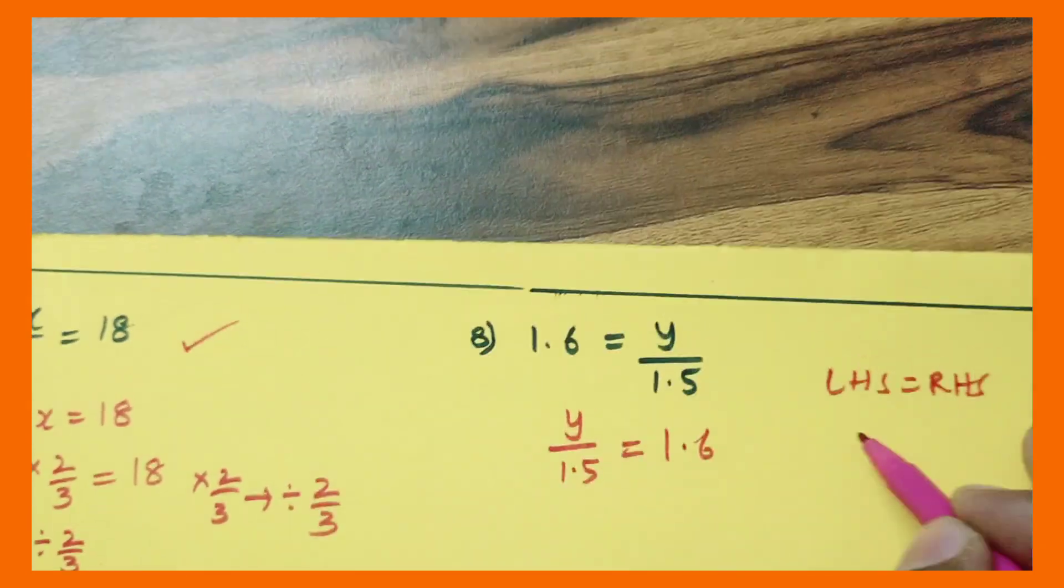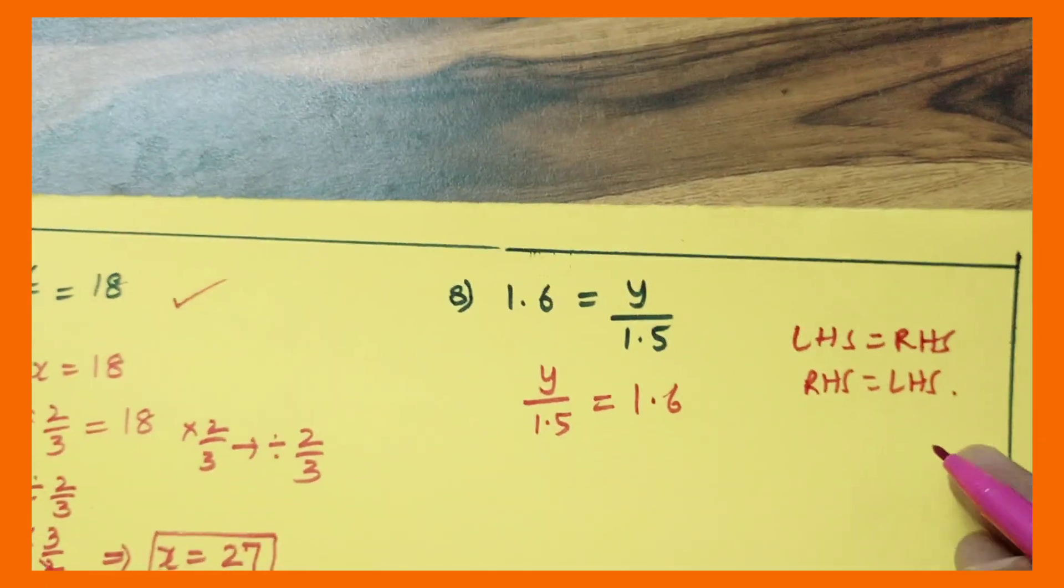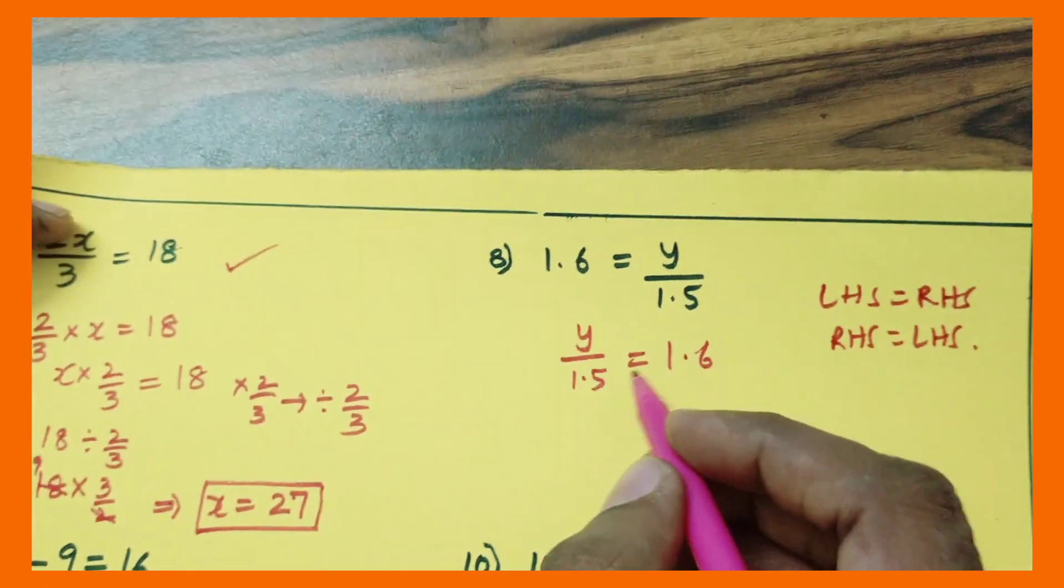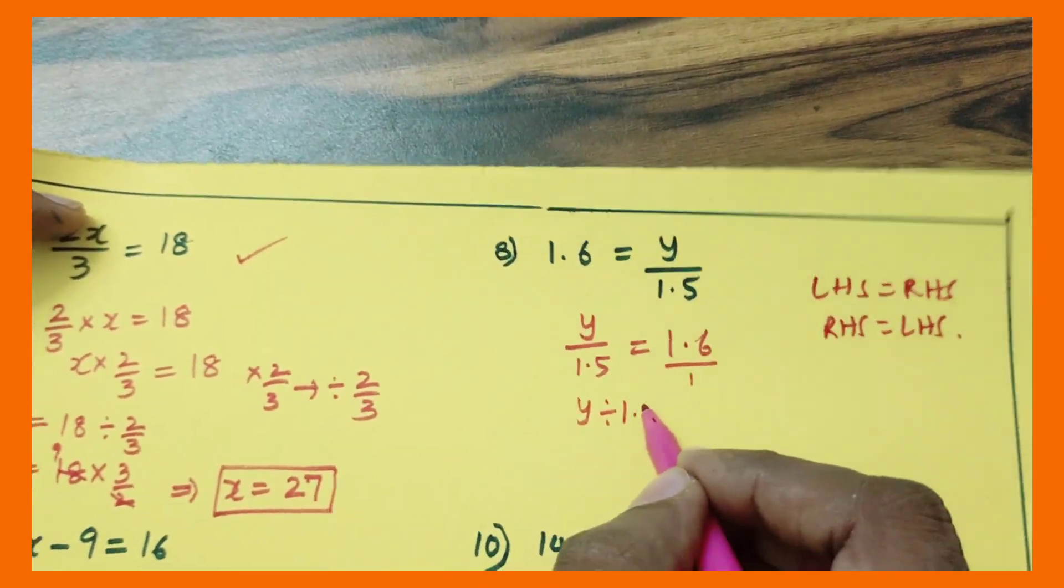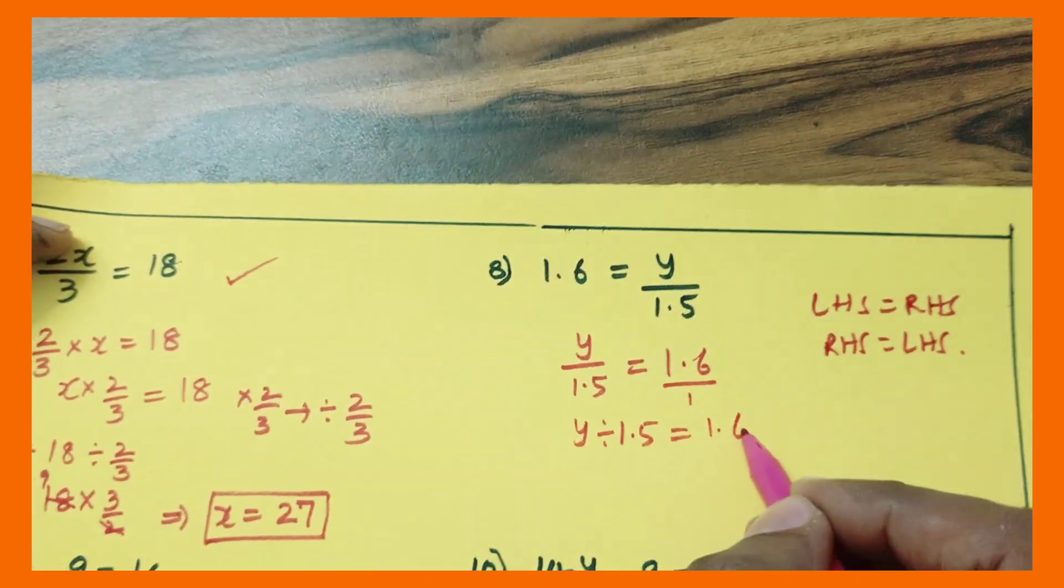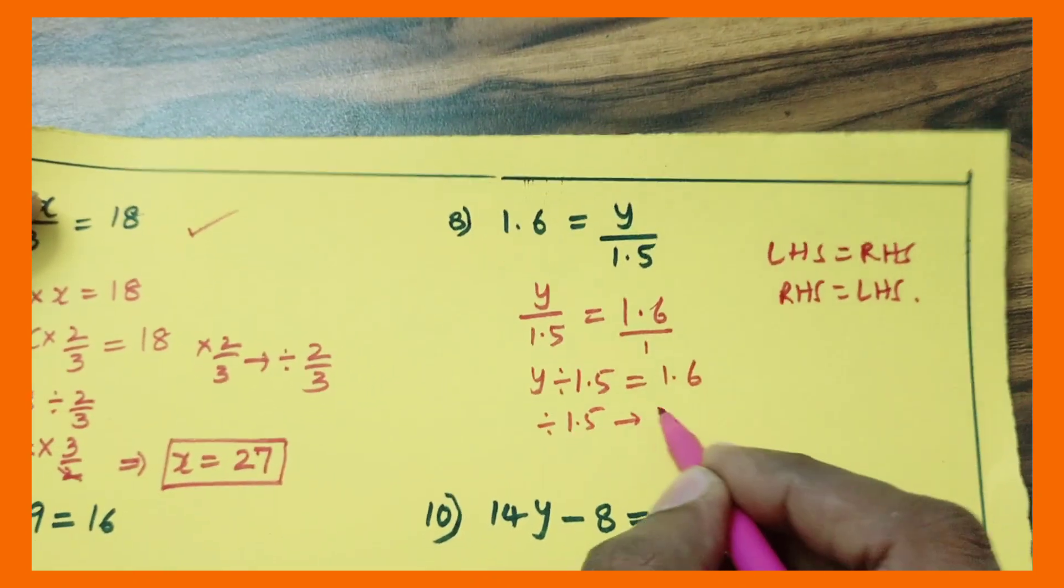This can be written any time, any point of time in any question. So now this is nothing but y divided by 1.5 is equal to 1.6, and divided by 1.5 is going to become into 1.5.